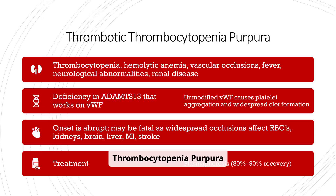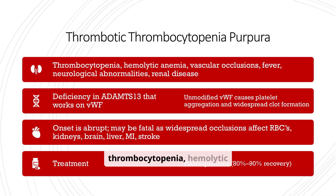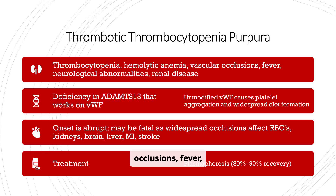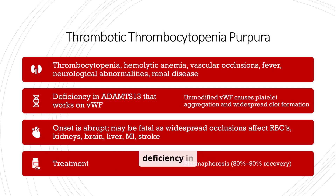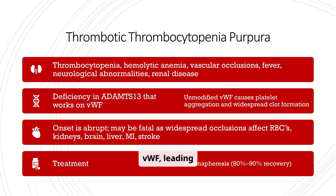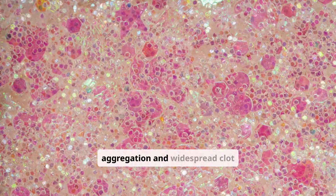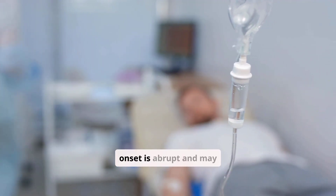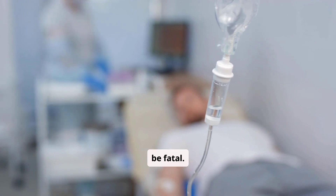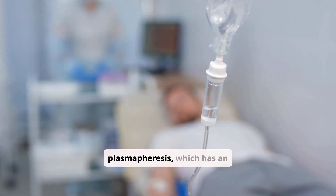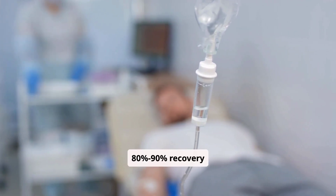Thrombotic thrombocytopenic purpura (TTP) presents with thrombocytopenia, hemolytic anemia, vascular occlusions, fever, neurological abnormalities, and renal disease. It is caused by a deficiency in ADAMTS-13 that works on VWF, leading to unmodified VWF causing platelet aggregation and widespread clot formation. The onset is abrupt and may be fatal. Treatment is plasmapheresis, which has an 80–90% recovery rate.